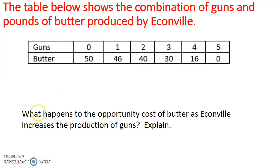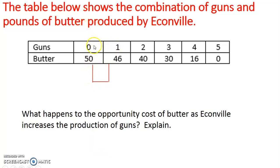So if we want to find out what happens to the opportunity cost of butter as Econville increases the production of guns, we have to use marginal analysis. We're going to go from zero units of guns to one unit of guns, and when that happens, we lose four pounds of butter.